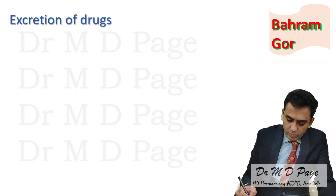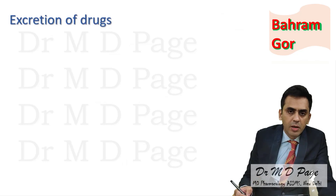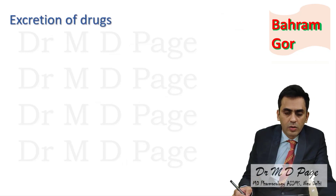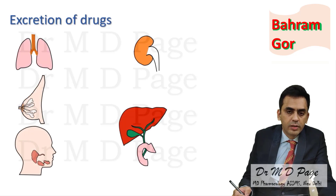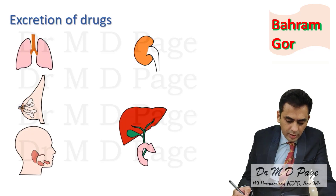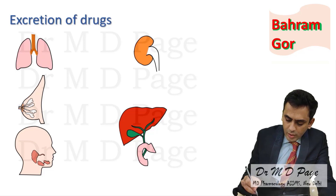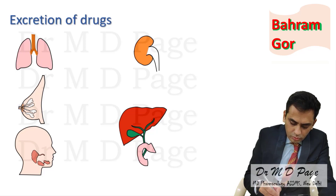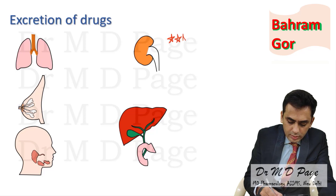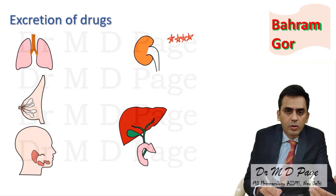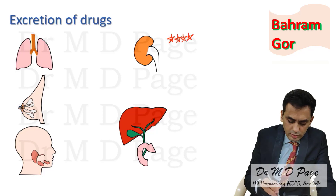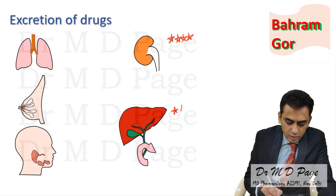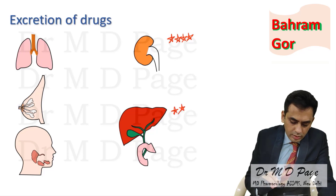In excretion of drugs, apart from the kidney there are many other organs by which a drug can be excreted — like liver, sweat and salivary glands, lungs, etc. Among these, the most important route is the kidney or renal excretion, which accounts for most drug excretion. Apart from that, the next most important is the liver and feces.